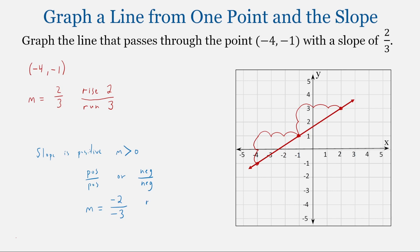What that means is we will rise negative 2 — go down 2 — and run negative 3 — move to the left 3 spaces. So let's practice a few more.